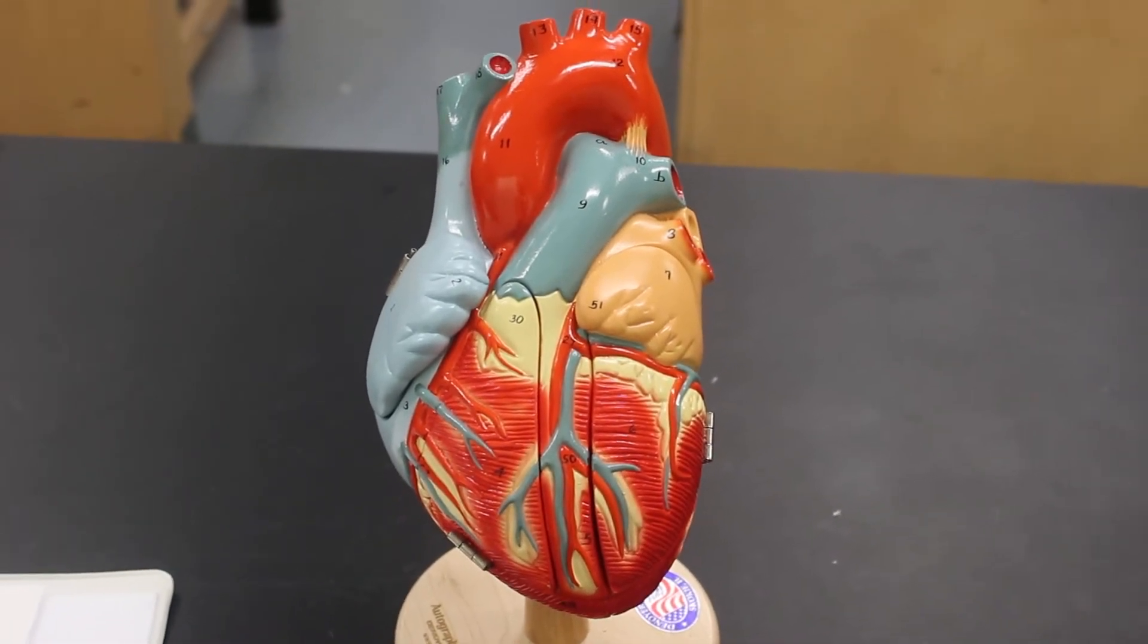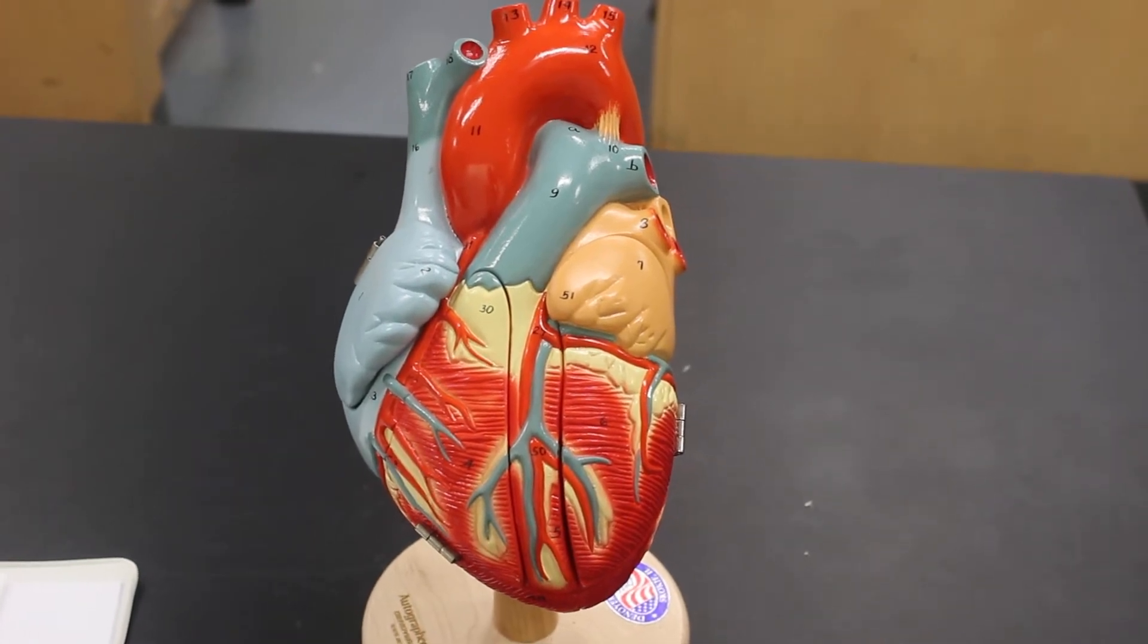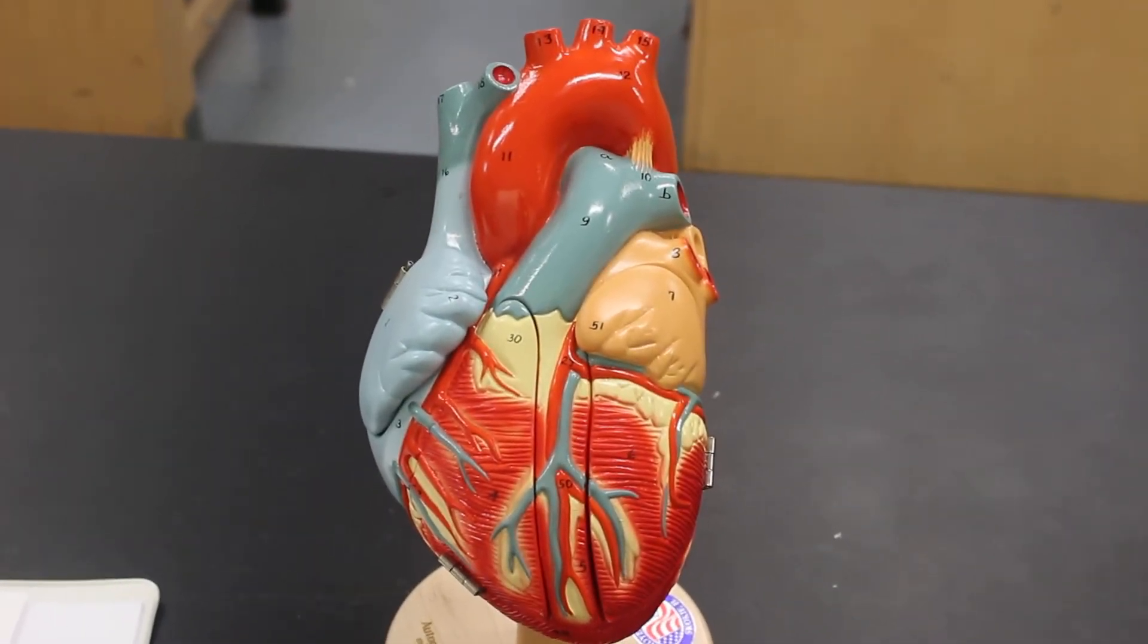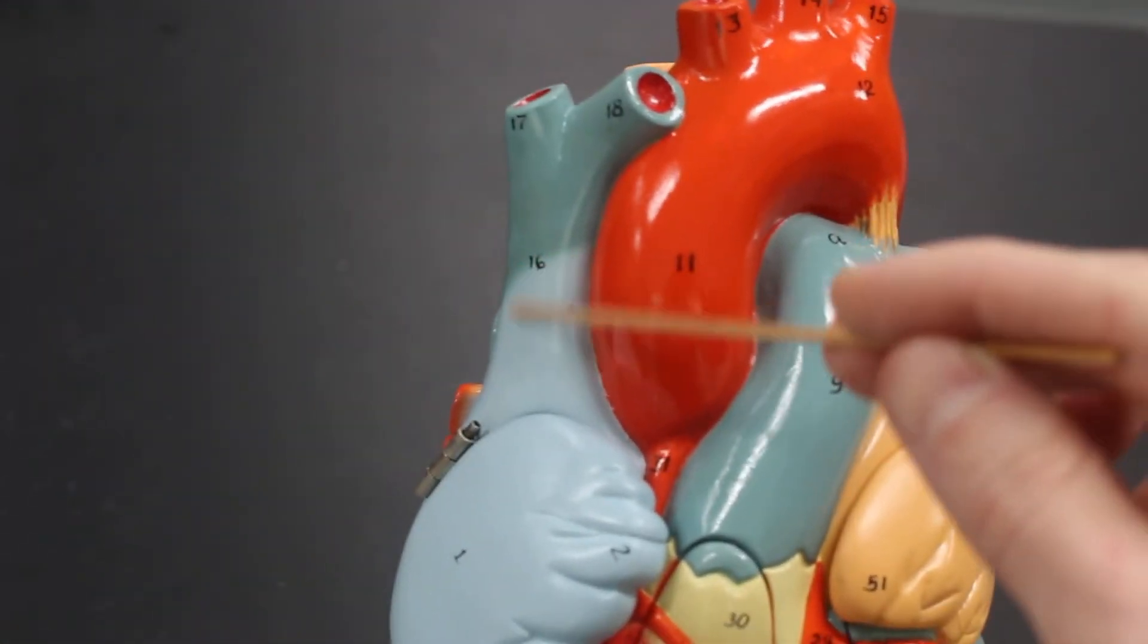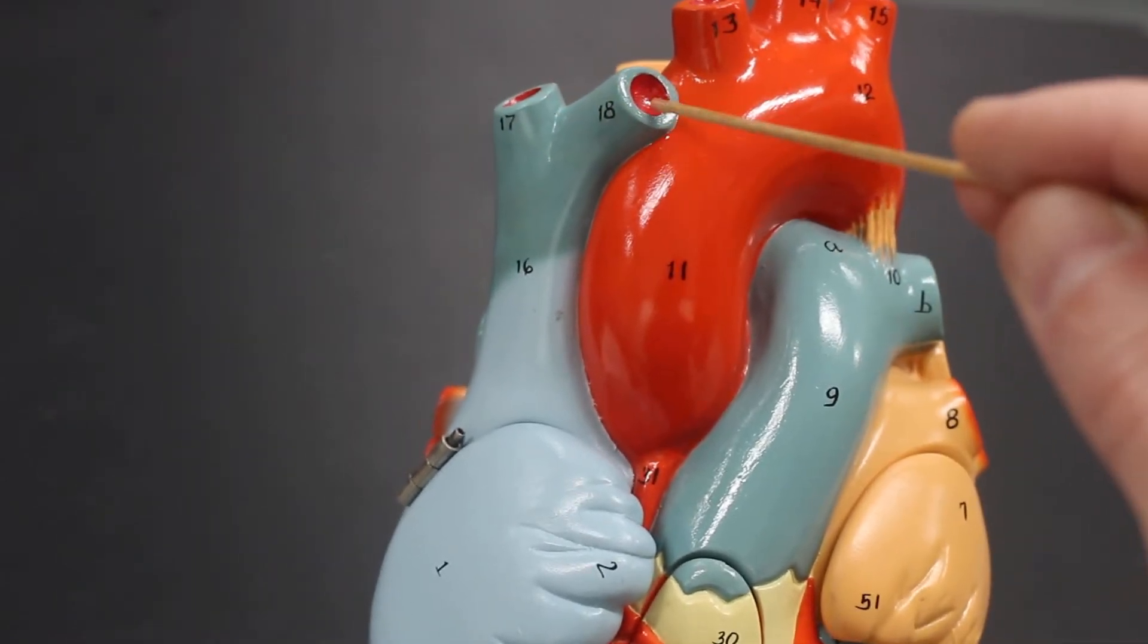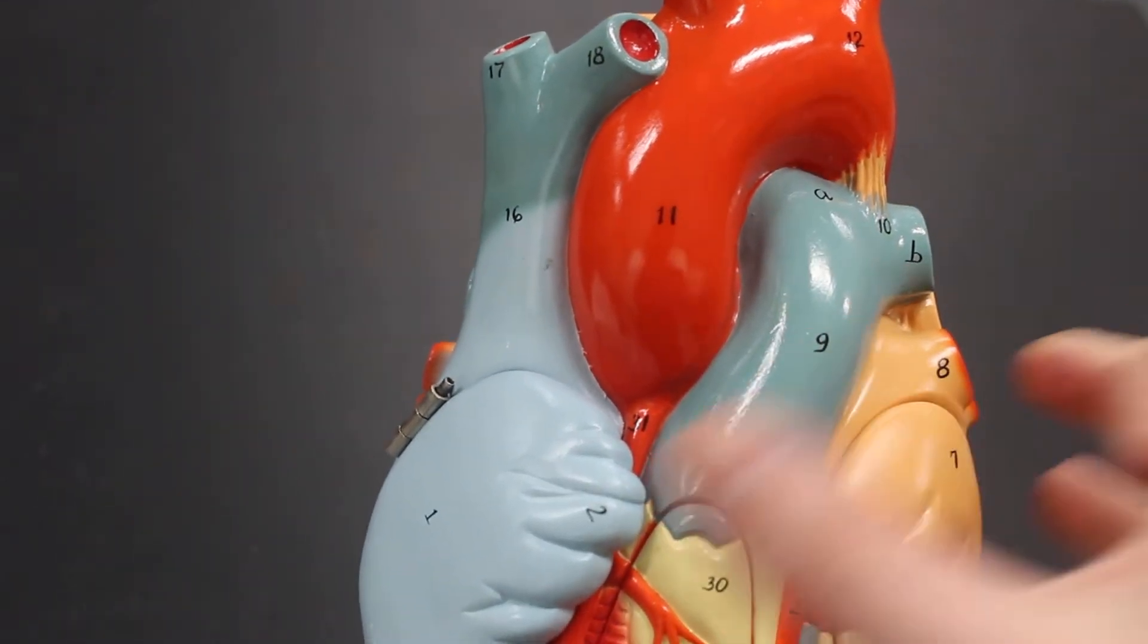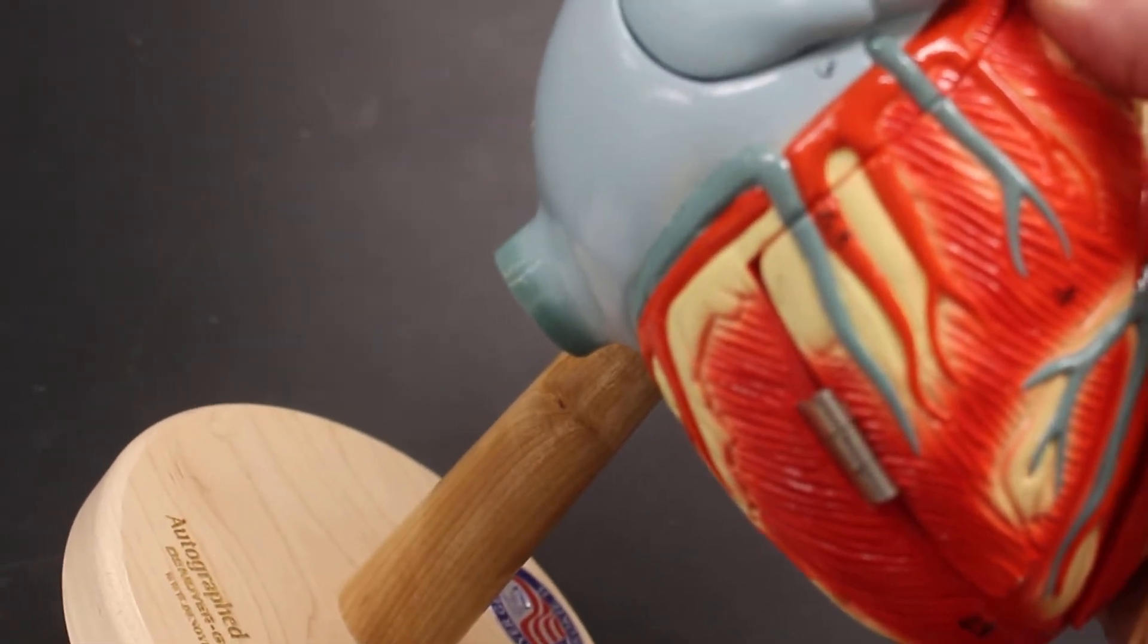Here is the model of the heart. I will start with the blood vessels that you can see on the outside of the heart. We have over here the superior vena cava being formed from the right and left brachiocephalic veins. Down here is the inferior vena cava.